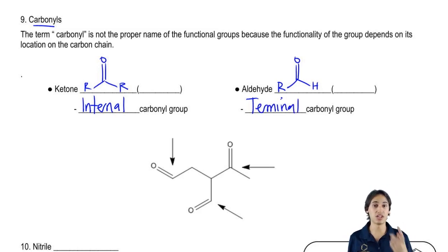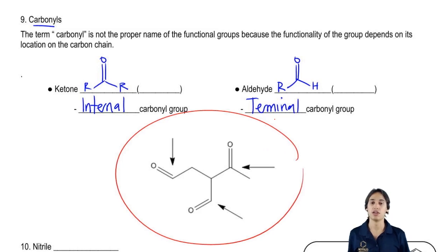They're actually words that we use a lot in orgo. It means something in the middle of a chain or of a ring, or something at the very end. And you can guess that terminal would be the end. So here what I have is three carbonyls, and instead of thinking of H's and R's, we could think about internal and terminal.